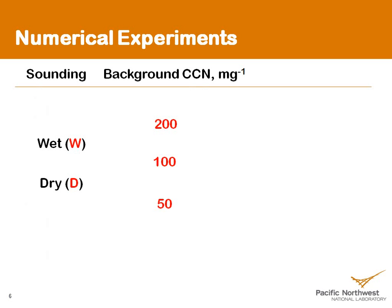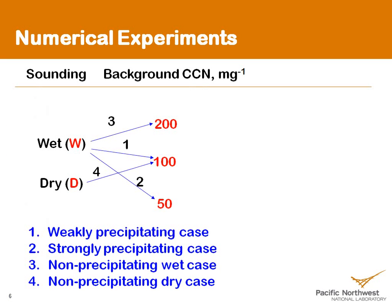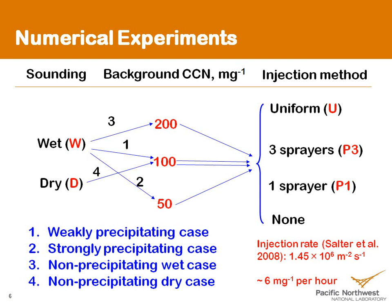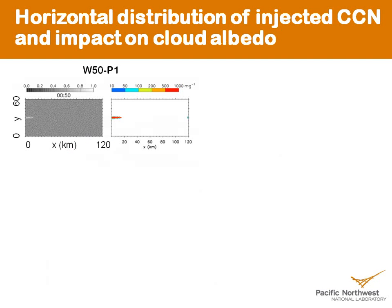Using these two sets of soundings and three prescribed background CCN number concentrations, we construct four cases: a weakly precipitating case, a strongly precipitating case, a non-precipitating wet case that is relatively more polluted, and a non-precipitating dry case. We also wanted to test the importance of injection method, so for each case we run one control case, one with a single sprayer, one with three sprayers, and a uniform area source — keeping the injection rate the same in terms of total number of particles per unit time.